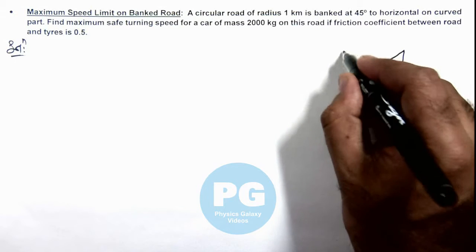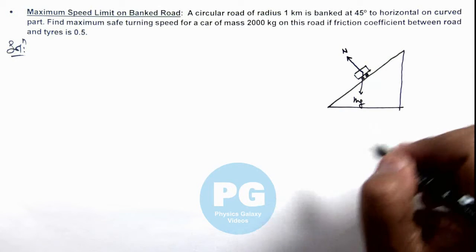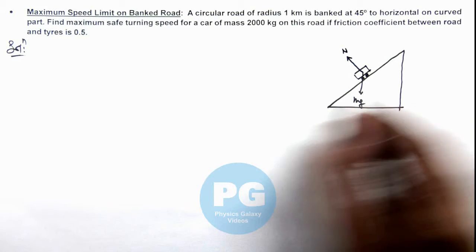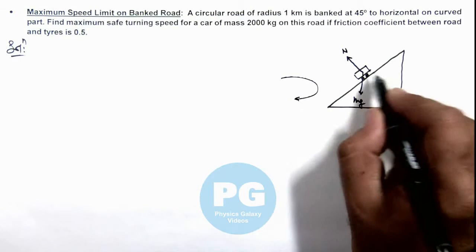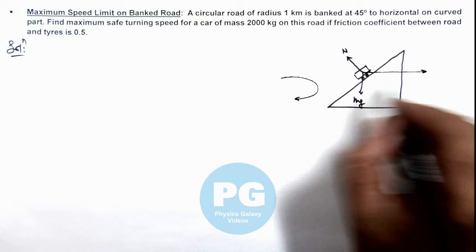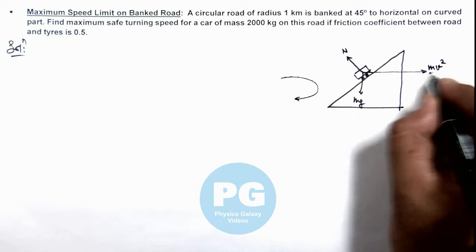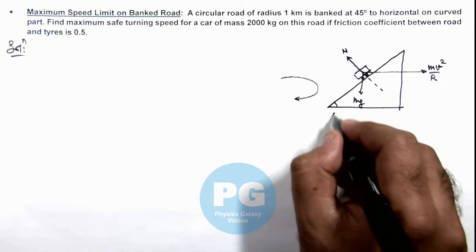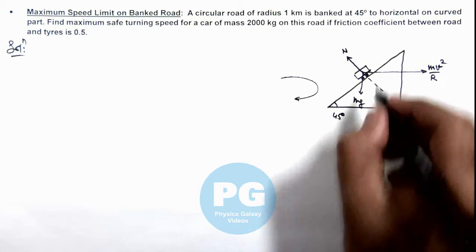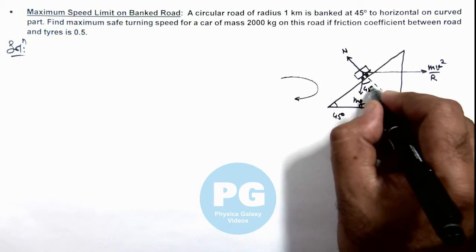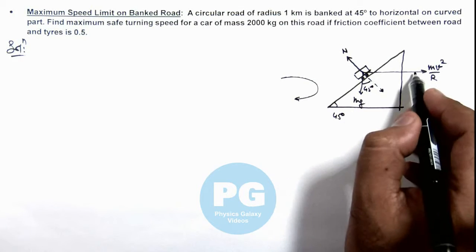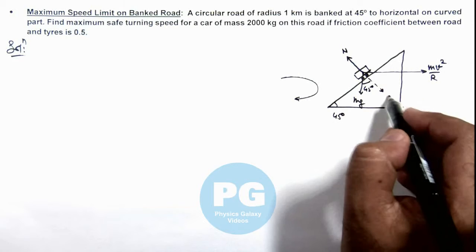As it is taking a turn like this, the centrifugal force will act on it in rotating frame that is m v square by r. And we are given that this angle is 45 degree, so this will also be 45 degree and normal reaction can be given by the sum of the 2 components of these forces over here.